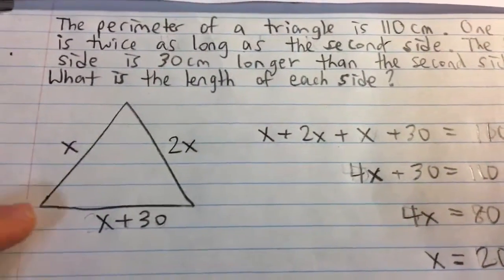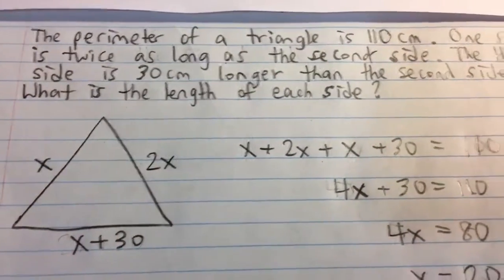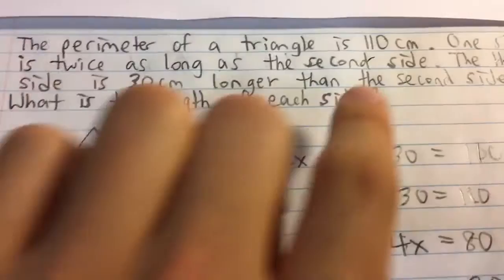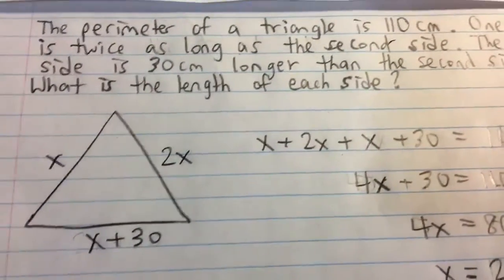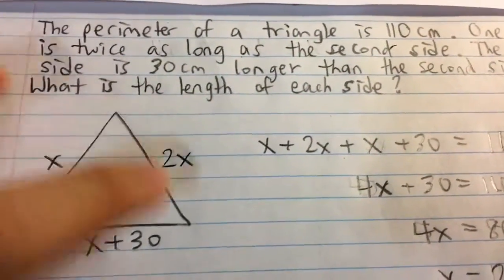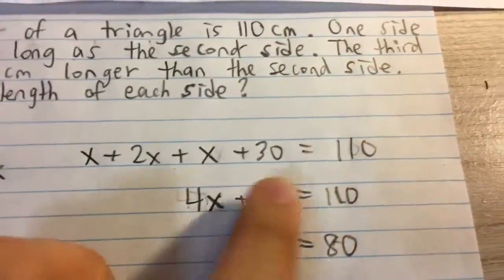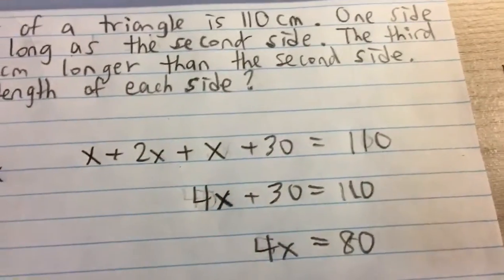So now we have expressions for all three sides of the triangle. And we know that we're given the perimeter here, it's 110 centimeters. And we know the perimeter is equal to the sum of all the side lengths. So we just take x plus 2x plus x plus 30. That's equal to 110 centimeters.